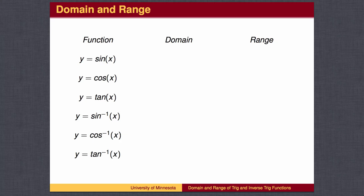The inputs to the functions sine and cosine are typically thought of as angles on the unit circle, measured in either degrees or radians. Every angle has a sine value and a cosine value, so the domain of both the sine function and the cosine function is everything from negative infinity to infinity.